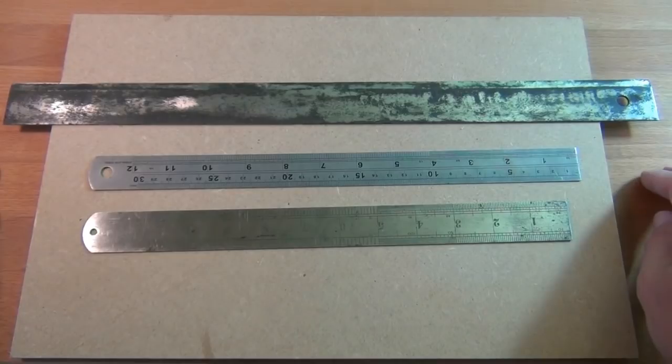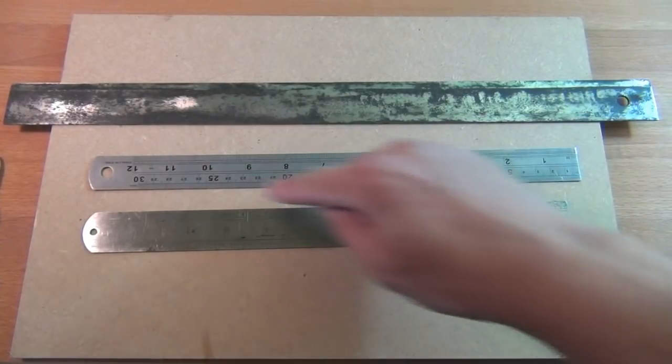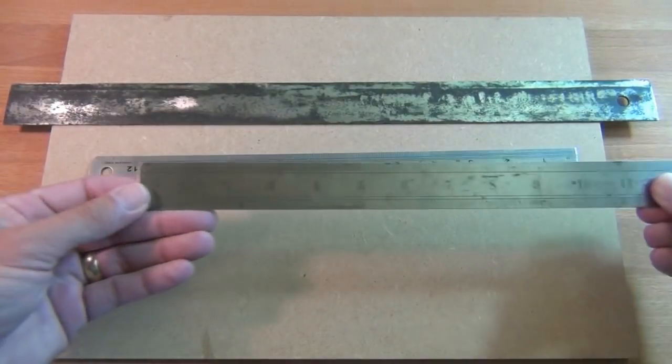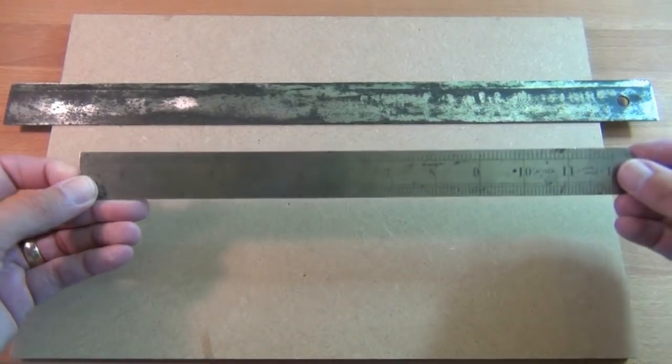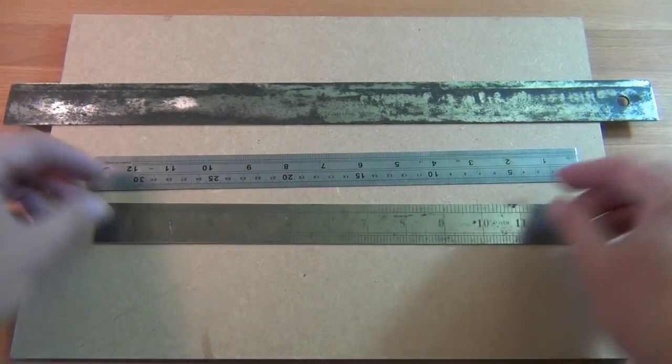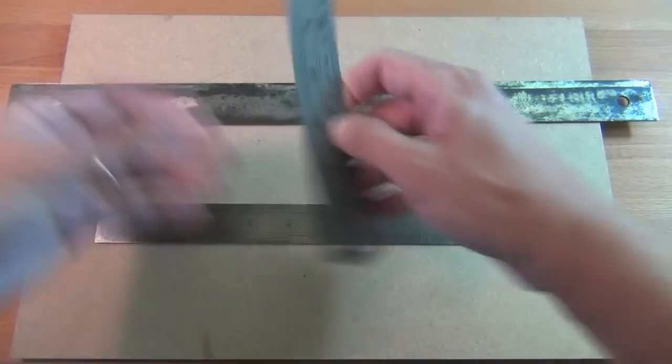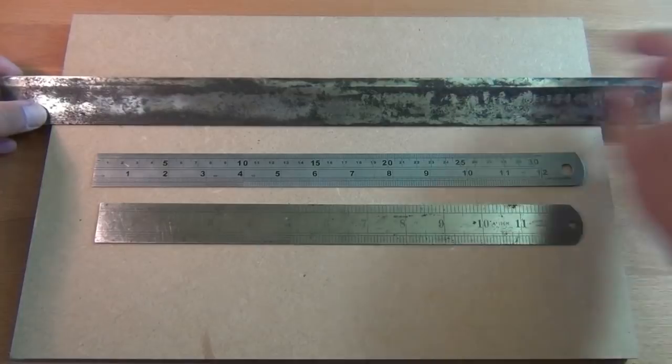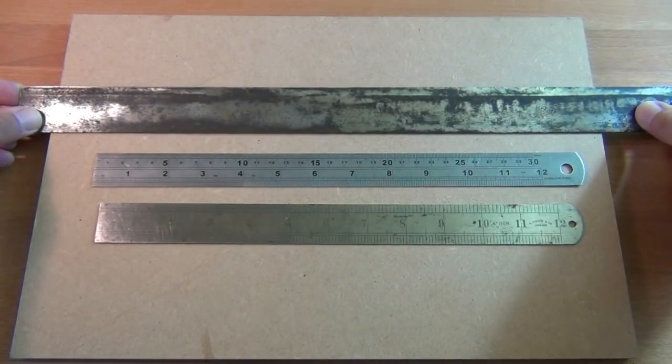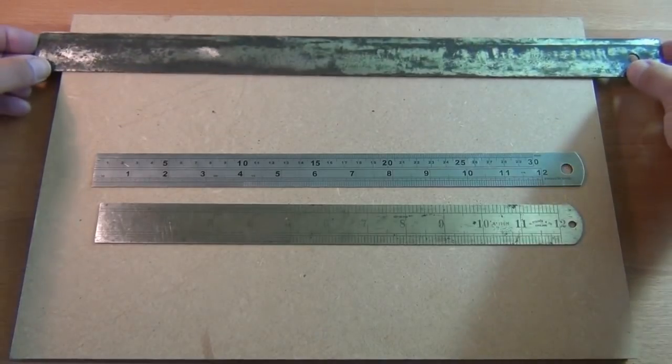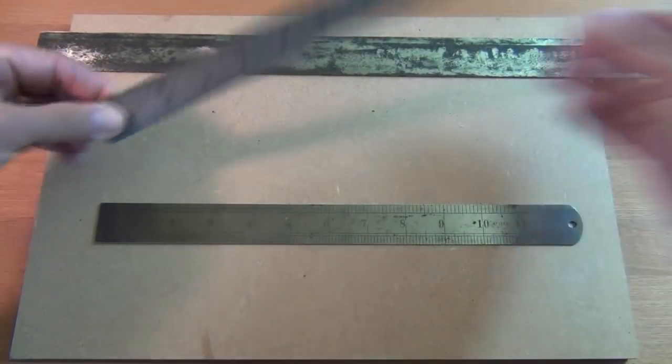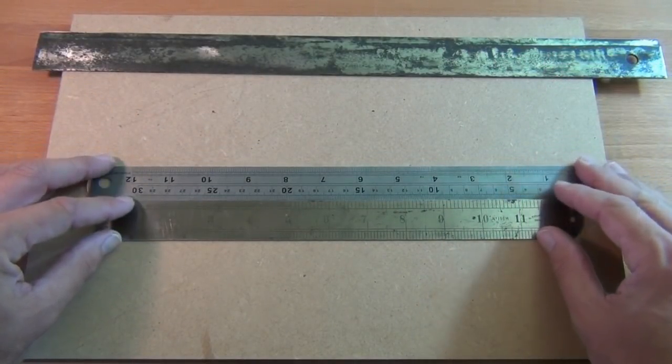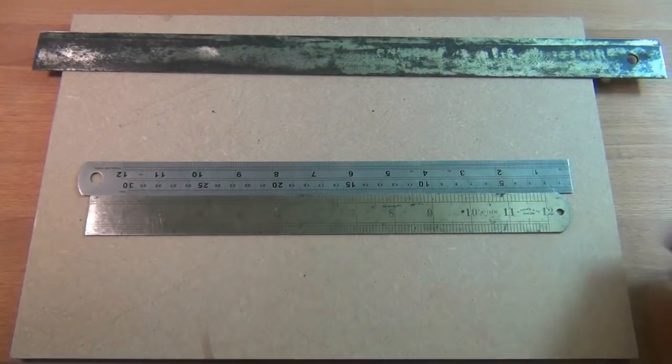So basically what we're looking for is three edges which are supposedly straight. And we'll use the top edge on this imperial rule, we'll use the top edge on this imperial and metric rule, and we'll use the beveled edge on this straight edge. So if we put these two edges, top edges together on the steel rules, if they're straight, you would think that there would be no gap along the length.